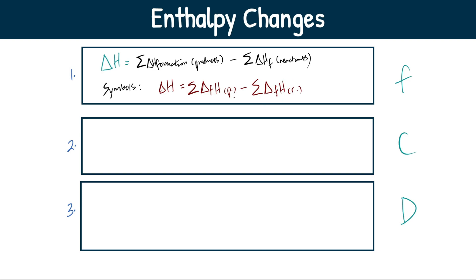The R and P obviously reactants and products. So you chuck that on your page, you do the sum, do the sum minus one from the other and that would give you enthalpy change. Let's do the next one, combustion.